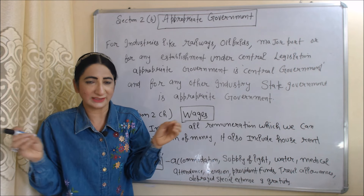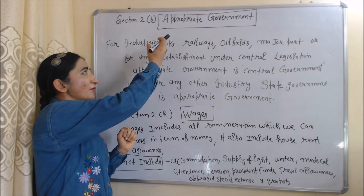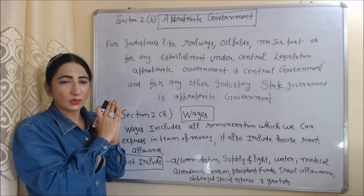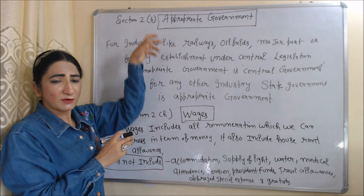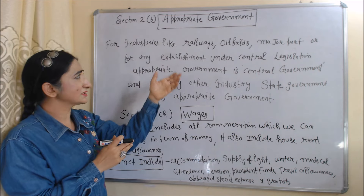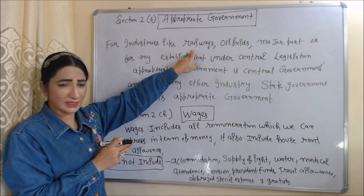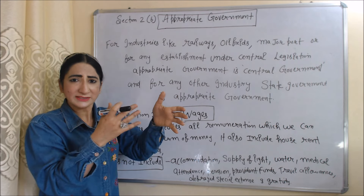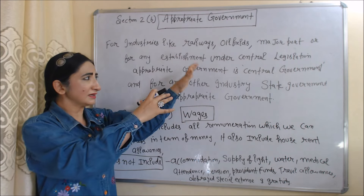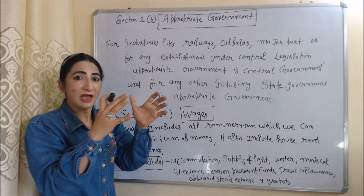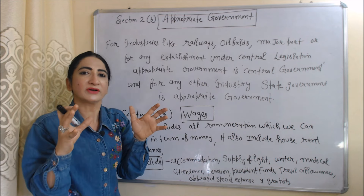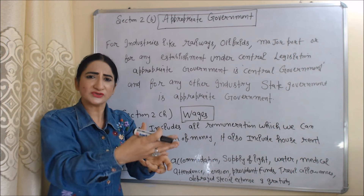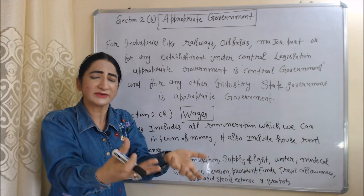Now we are going to talk about some important definitions according to this act. The first definition is 'appropriate government' according to Section 2(b). For industries like railways, oil fields, major ports, or any establishment under central legislation, the appropriate government will be the central government. For any other industry, the appropriate government will be the state government.